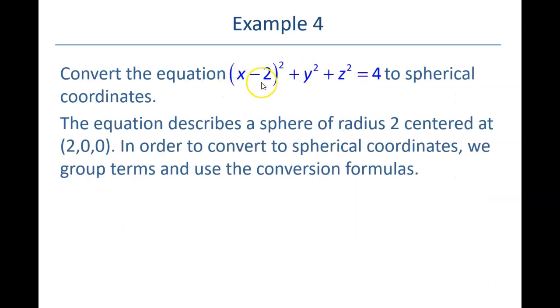Alright, and so as we said, this is a sphere centered at (2,0,0). So we're going to foil this out. So if I foil this out, I would have an x², a minus 4x, and a plus 4.